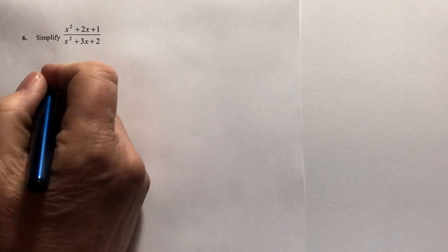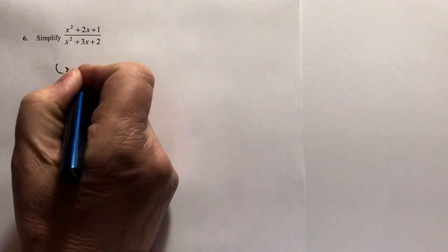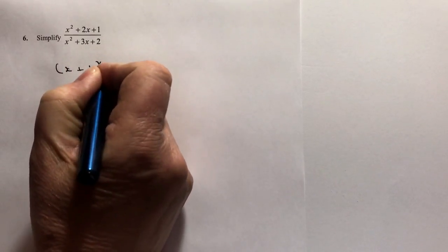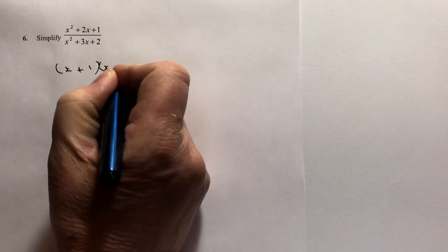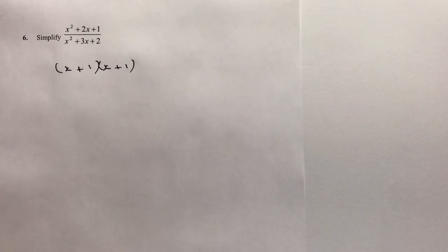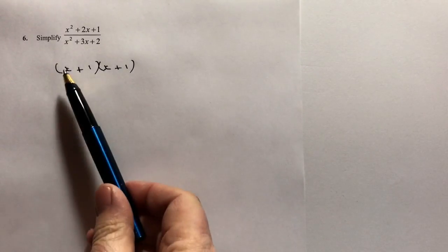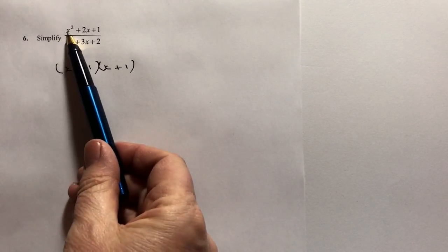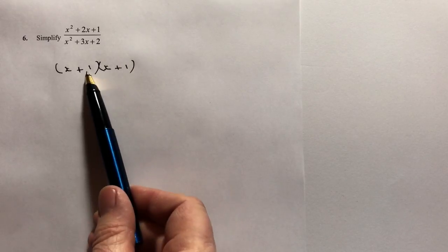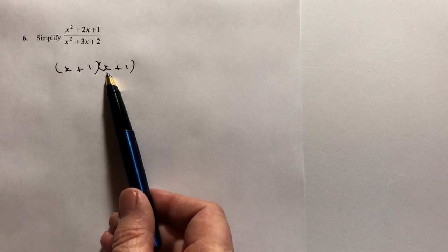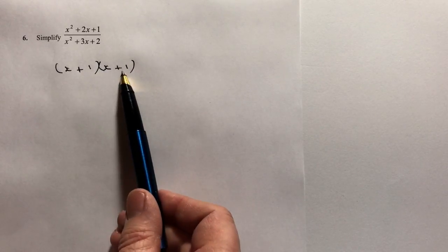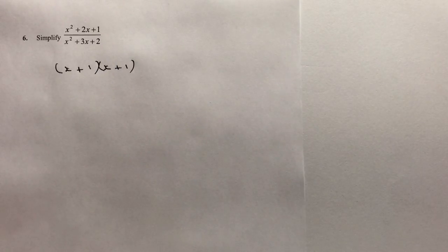What I can do is rewrite the top as x plus 1 multiplied also by x plus 1. I know that to be true because x times x is x squared, plus 1x plus 1x is plus 2x, and then plus 1 times plus 1 is also plus 1.